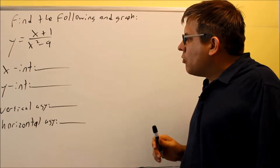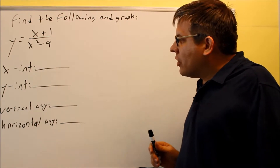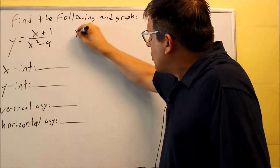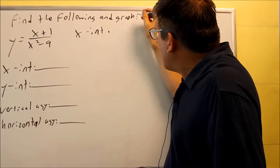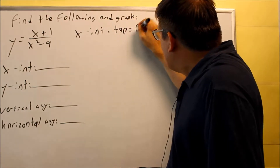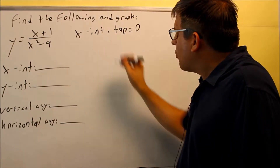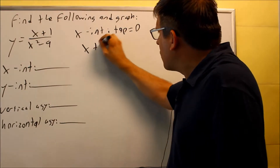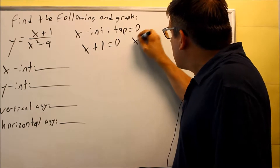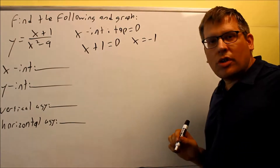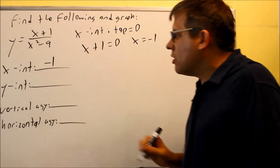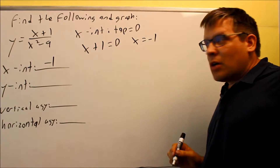First, we want to find the intercept — this is the same information we talked about before. To find the x-intercept, we set the top equal to 0. x plus 1 equals 0, so we get x equals negative 1. So negative 1 is going to be the x-intercept.